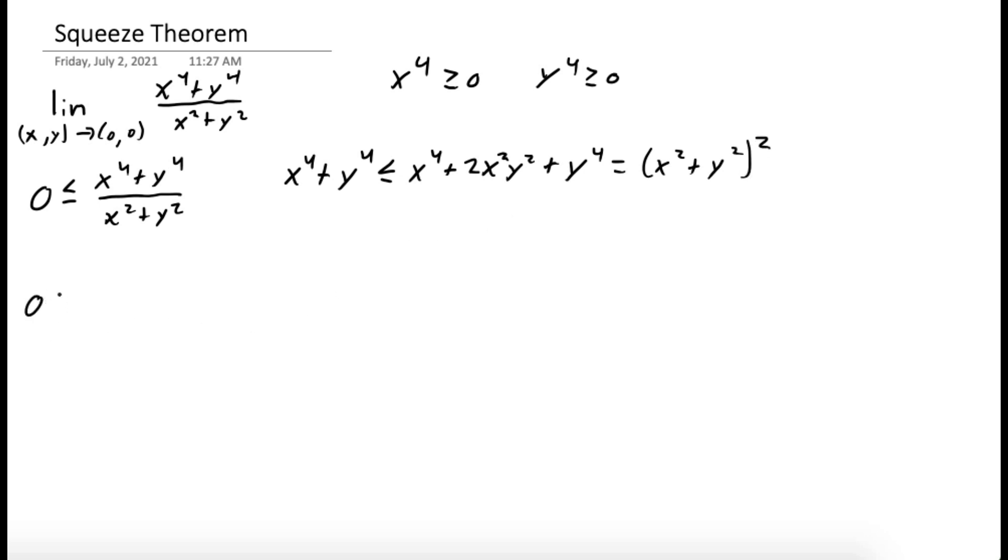Okay, so now we have our lower bound is 0. Our inside function, which we're trying to evaluate the limit of, that stays the same. And our upper bound is x squared plus y squared squared all over the denominator we had in our original function.